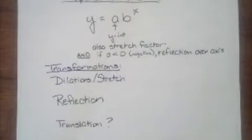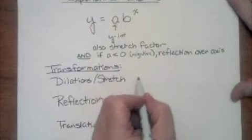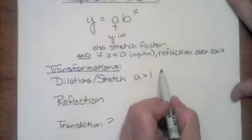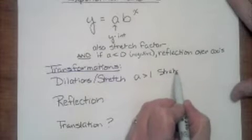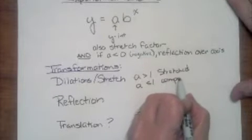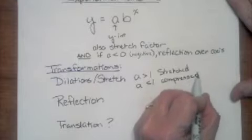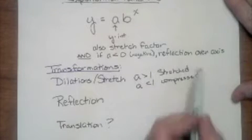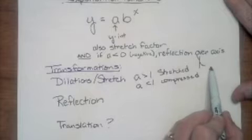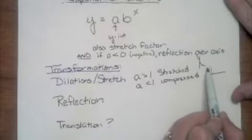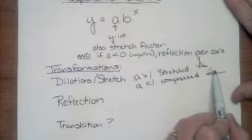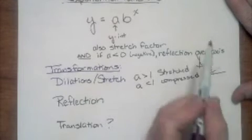Dilations are stretches. If a is greater than one, the graph is going to be stretched. And if a is less than one, it is compressed — kind of squashed. So when it's stretched, it happens much faster, it goes very fast. And when it's compressed, it takes a little bit longer to do its growth or decay. That one's a decay, and this is its growth — it just kind of goes really slowly up, not so steep.